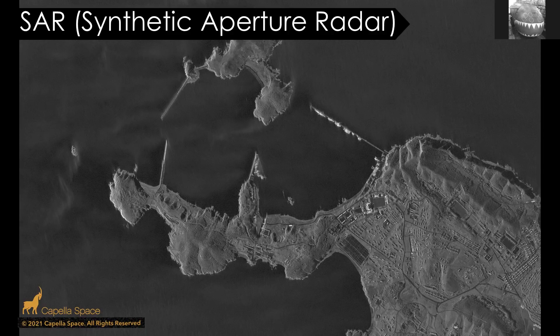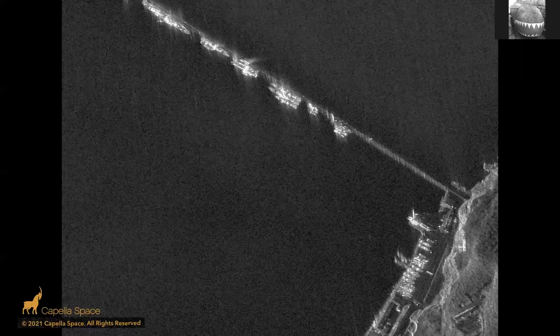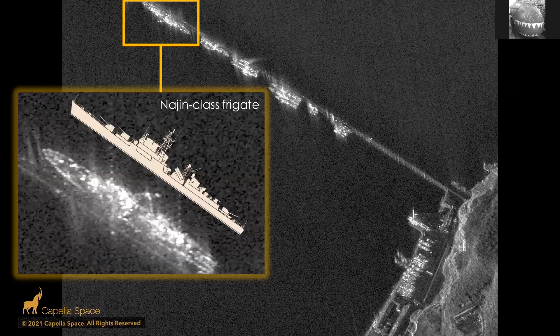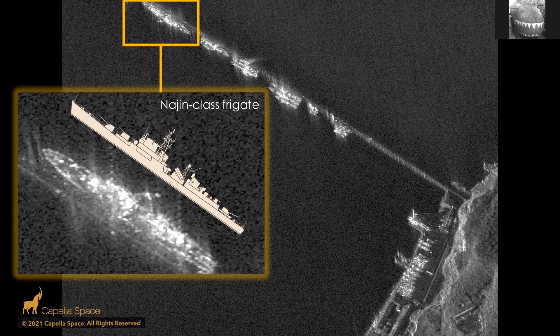This image from Capella Space is of a port or naval base in North Korea. If we zoom in, we can see ships along the seaboard and at the side, and we can start to identify them. The satellite was north of this location, so the image is effectively upside down — if we flip it, we get a more human-interpretable view and can identify a Najin-class frigate. Specialist knowledge is required for these identifications, and it's not always easy. What you're seeing is the reflection of radar energy back off an object.